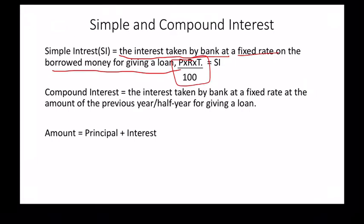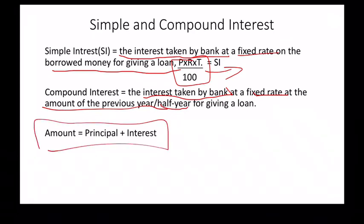Compound interest is the interest taken by the bank at a fixed rate, but this time it is calculated on the amount of the previous year. For example, the PRT by 100 of the first year would give the principal of the second year. It can be half-yearly also, meaning PR times one-half instead of one year. After that, amount equals principal plus interest. The rate is a fixed amount or it can change if the question requires. Time and principal are decided by you.